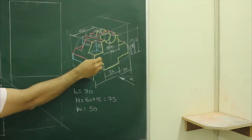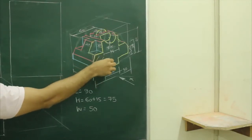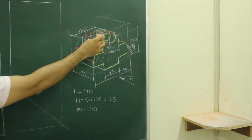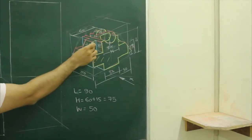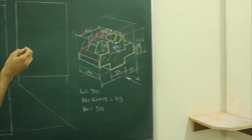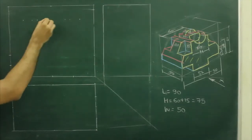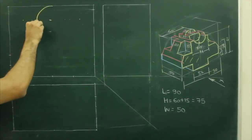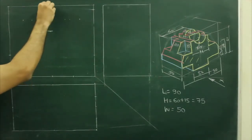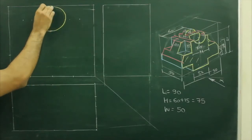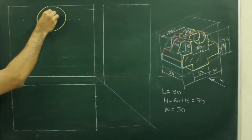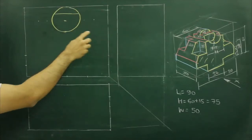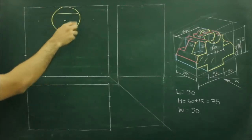In this case, when you see in front view, you will see this part plus this circle plus this slope. So first we will start with a circle. We will mark the center point and we will draw radius 15, come down by 8 and draw a line. So when you see from the front, you will see a circle like this.